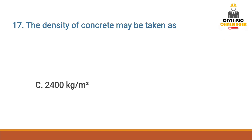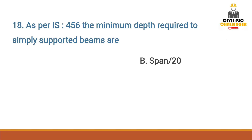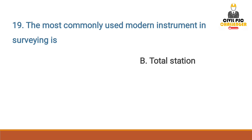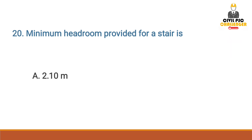Answer option C: 2400 kilogram per meter cube. Next question: as per IS 456, the minimum depth required for simply supported beams — answer option B: span by 20. Next question: the most commonly used modern instrument in surveying — answer option B: total station. Minimum headroom provided for a stair — answer option A: 2.10 meter.